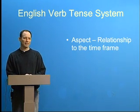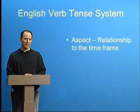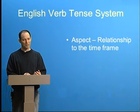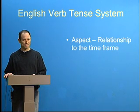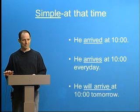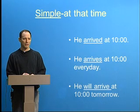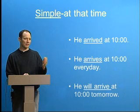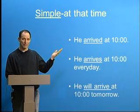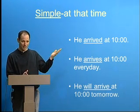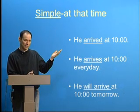One question: what do I mean when I say aspect? Aspect is the relationship to the time frame. Say I have simple — the aspect simple means at that time. If I look here where it says he arrived at 10 o'clock, that's past simple. What I'm saying is: at that time in the past, he arrived — at 10 o'clock, he arrived.